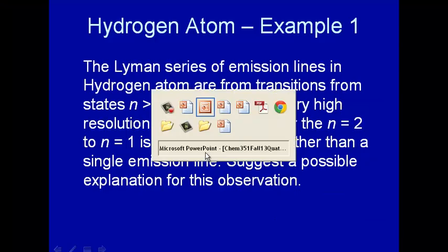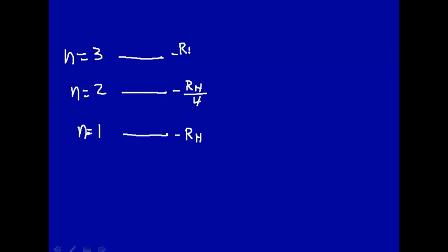All right, well, let's just see what's going on here. So let's do n equal 1, n equal 2, n equal 3, and so on. So this is energy we're plotting up this way. And for the n equal 1 state, the energy is minus the Rydberg constant. For the n equal 2 state, it's minus the Rydberg constant divided by 4. n equal 3 state is minus the Rydberg constant divided by 9. And all the way up to n is equal to infinity. There, the energy is zero.